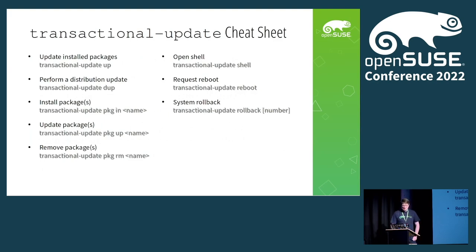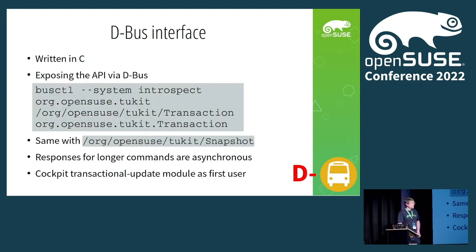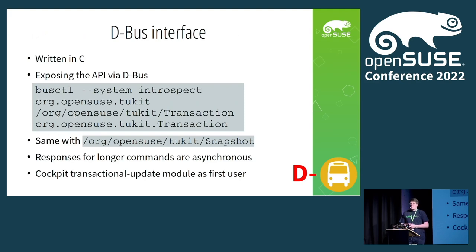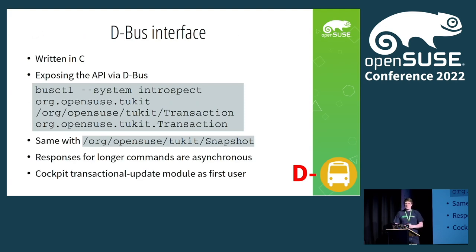If you look at the transactional update cheat sheet, nothing has changed from the commands themselves. The next interesting thing is the DBus interface. We have a user of the DBus interface already, which is Cockpit. Most of the functionality of the header files is exposed via the DBus API. One interesting thing: if you're executing any command, like a Tumbleweed update, that can take a long time. So the execution of commands is actually asynchronous — you will get a signal as soon as the operation has finished.